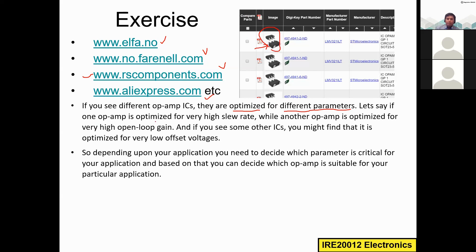Different operational amplifiers are optimized for different parameters. For example, one op-amp may be optimized for a very high slew rate so the output reaches V_sat very quickly. Another may be optimized for a very high open-loop gain — higher than the 10 to the power of 5 seen in the IC 741. By checking the datasheet, you can find which IC suits your needs.